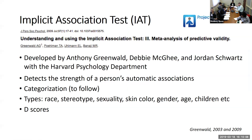For example, the gender-science IAT reveals that most people associate women more strongly with liberal arts and men more strongly with science. For the purposes of this study, we use the race IAT. Overall, with the race IAT, 70% of individuals have an implicit preference or bias against Blacks.